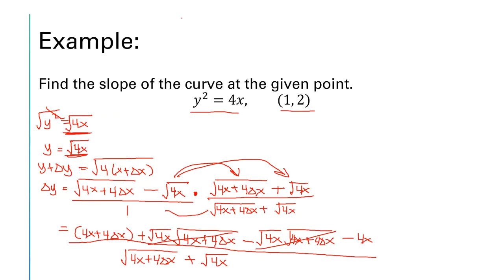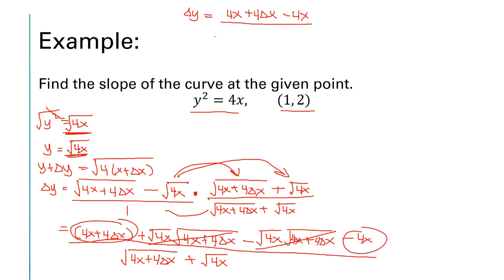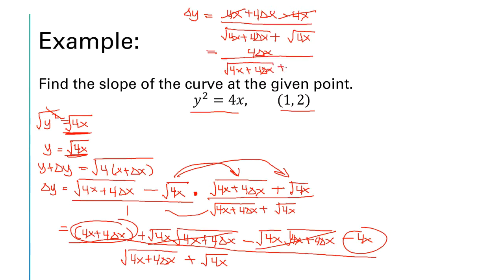After simplification, delta y = (4x + 4·delta x − 4x) divided by (√(4x + 4·delta x) + √(4x)). In the numerator, 4x − 4x = 0, leaving 4·delta x. So delta y = 4·delta x over (√(4x + 4·delta x) + √(4x)).